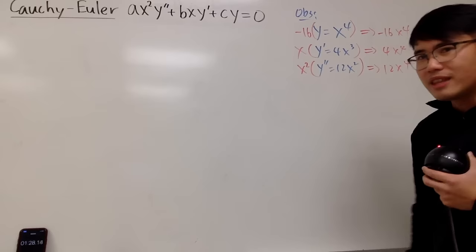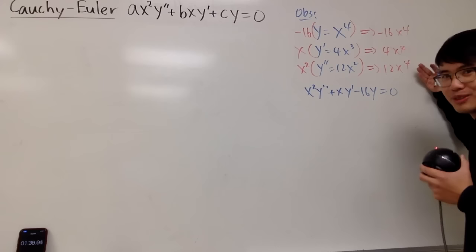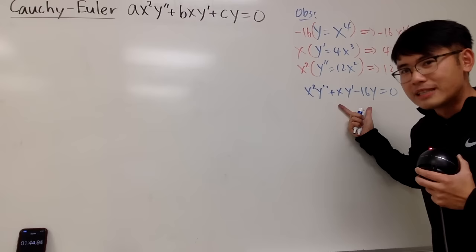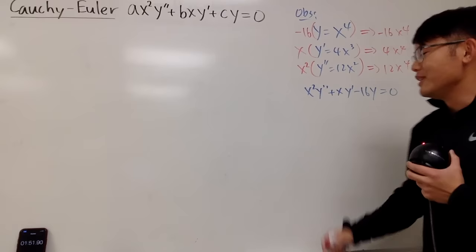This gives an example of a Cauchy-Euler equation because if you add everything together you get zero: x² y″ + x y′ − 16y = 0. Now the question is: given this equation, how are you supposed to know x⁴ is a solution, and are there other solutions? Most importantly, how can we write the general solution?